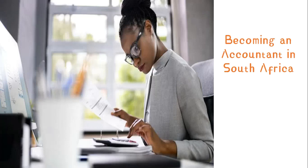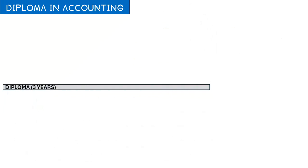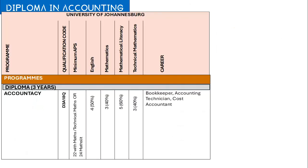Here I will use a few examples — remember each university will have its own requirements. Starting with a diploma: a diploma will take you three years. If you want to do a diploma in accounting, you'll need an AP score of 22 if you're doing pure maths or technical maths, or an AP score of 24 for math select. Additional requirements are a code 4 for English and a code 3 for mathematics, or code 5 if you do math select.